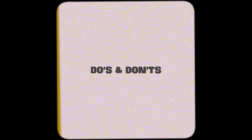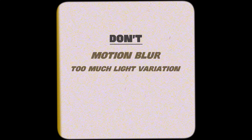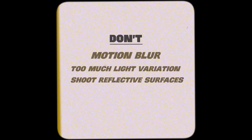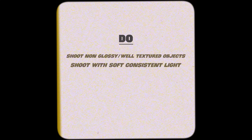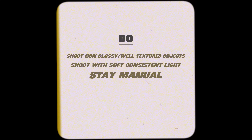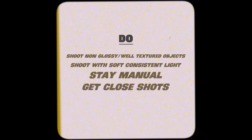And while doing these, I got a general do's and don'ts checklist for myself when scanning. For the don'ts: don't have motion blur in your image, try not to have too much variation in light as you move around, don't shoot reflective surfaces, and don't shoot in harsh light like direct sunlight. But do shoot non-glossy and well-textured things, shoot under soft consistent light, stay manual for good consistency, and depending on the object, get close shots for more detail in areas that are needed.